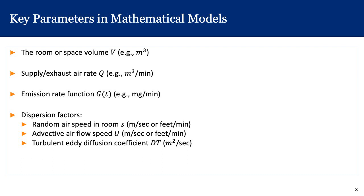The key parameters in the models we will discuss include: the room volume V in cubic meters or cubic feet; the supply or exhaust air rate Q in cubic meters per minute; and the contaminant emission rate G in units of mass per unit time, such as milligrams per minute.